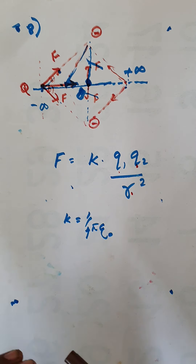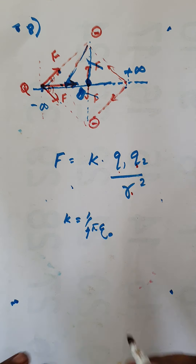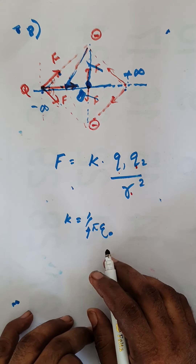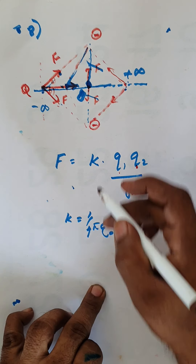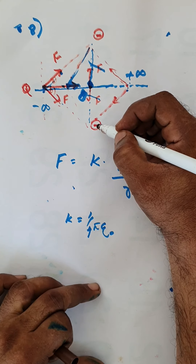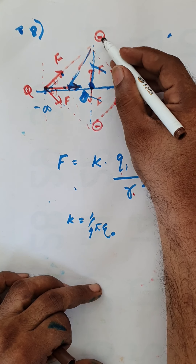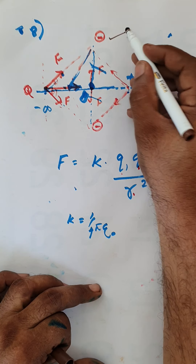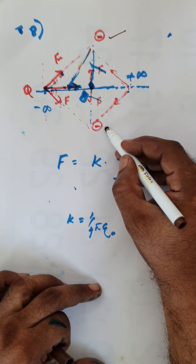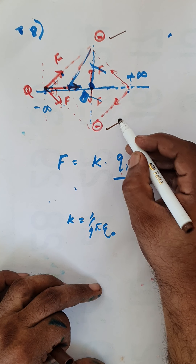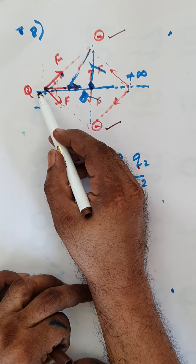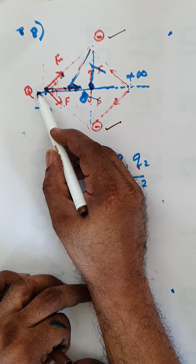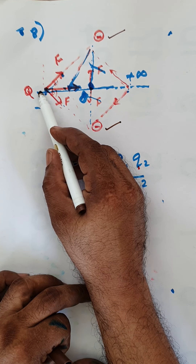Question number 8. There are two static negative charges, and this is the dynamic charge, capital Q.